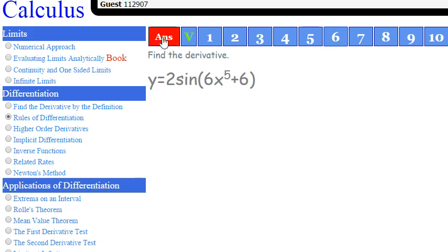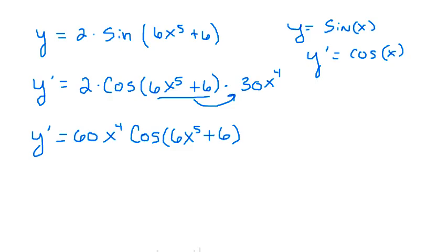So let's move over and see what this says. 60x to the 4th cosine of x to the 5th plus 6. Yeah, 60x to the 4th, there it is.